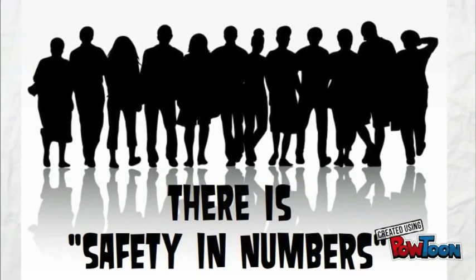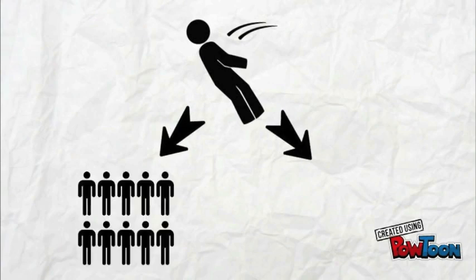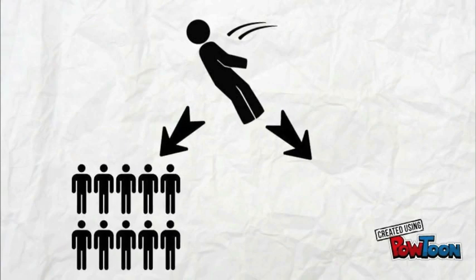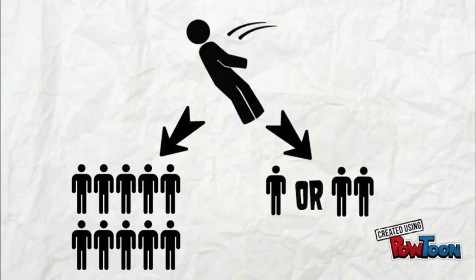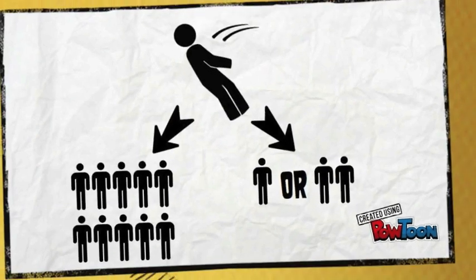Hello everybody, our group will be presenting the myth there is safety in numbers. This myth means that in general, it is better to have more people around you when something bad happens to you. For example, if you knew you were going to faint, would you choose to faint in a place where there are 10 people around, or would you choose to faint in a place with only 1 or 2 people in that area? Let's see what our friends think.